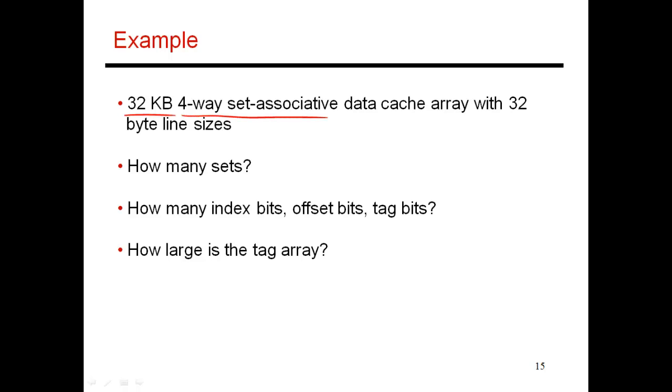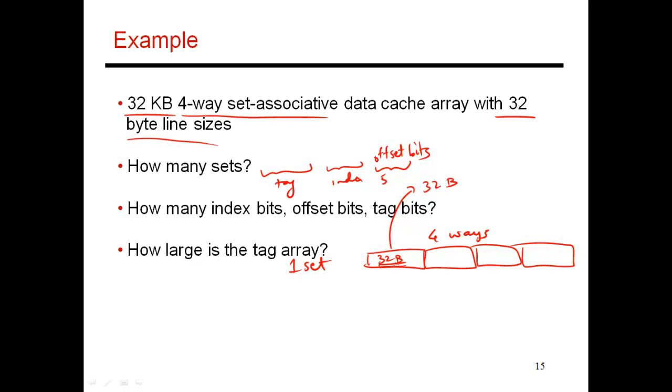So I have a 32 kilobyte cache. It's four-way set associative, and each block has a size of 32 bytes. So here's one 32-byte block. There are four of them in one set, so one set has four ways. Each way has a size of 32 bytes. So when the processor makes a request, I'm going to return these 32 bytes. So to pick out one byte out of these 32 bytes, you need five offset bits. And then the next set of bits are going to be your index bits. This is determined by how many sets you have. And then the rest is just tag.